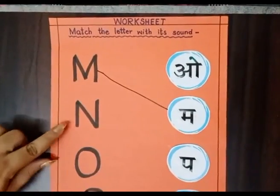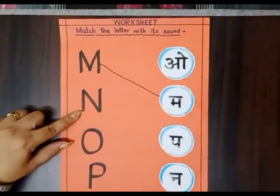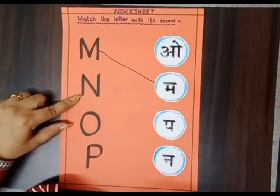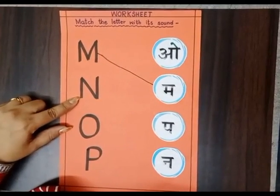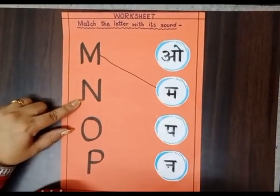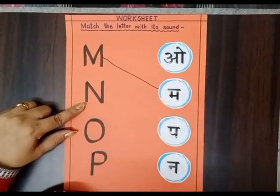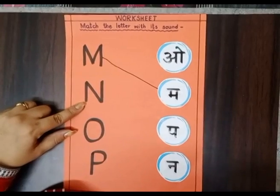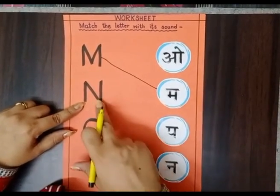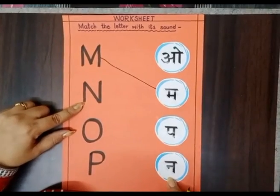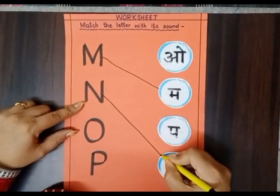Next letter is letter N. N says — N, anna knows, anna nest. So where's N? This is letter N. And where's its sound? Here. This is N — anna knows. Match the letter N with its sound.